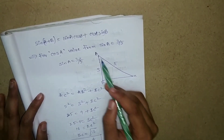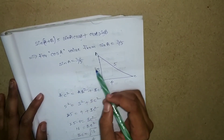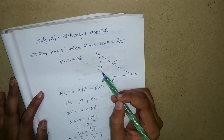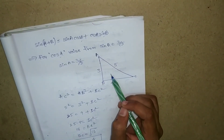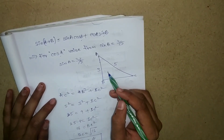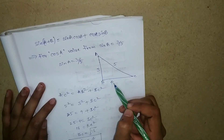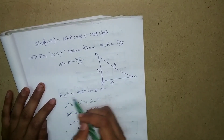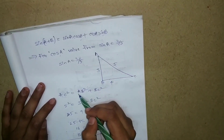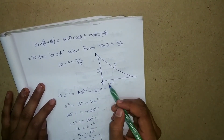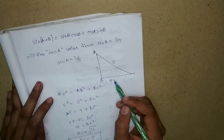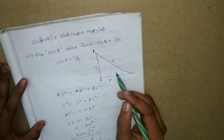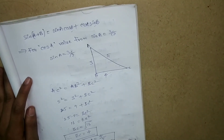By Pythagoras theorem: hypotenuse square equals opposite square plus adjacent square. So AC square equals AB square plus BC square. Subtracting, the adjacent side BC value equals 4. So cos a equals adjacent by hypotenuse, which is 4 by 5. Therefore cos a value equals 4 by 5.